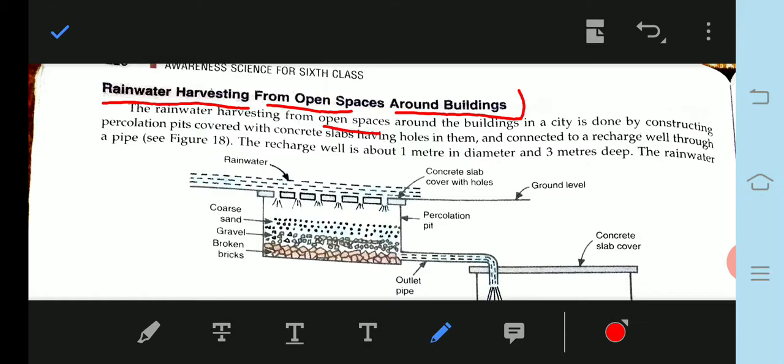In the city, this is done by constructing pre-collection pits covered with concrete slabs and connected to the recharge well through a pipe. The recharge well is about one meter in diameter and three meters deep, and then rainwater is collected.